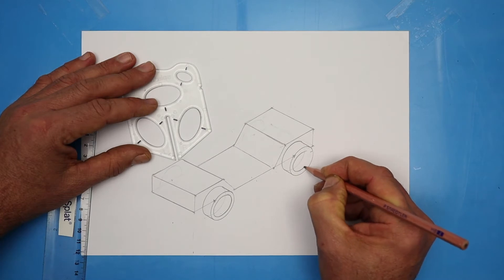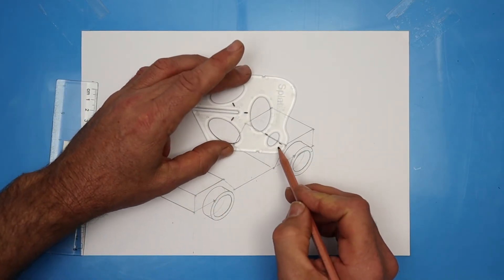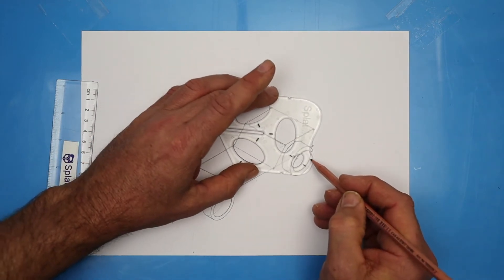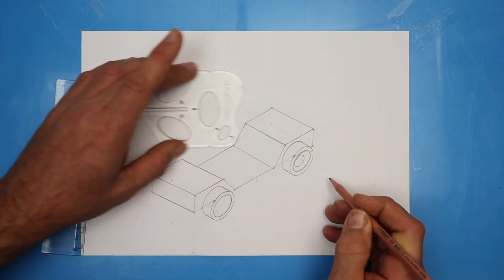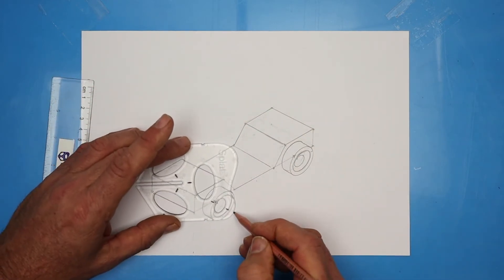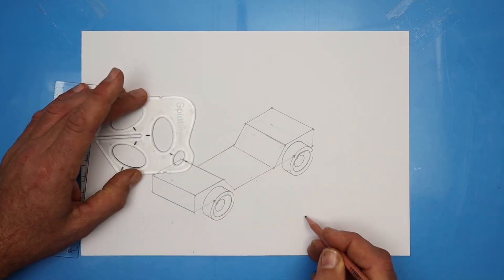Now we're going to draw the rim. We're using the small ellipse. Line it up on that angle. Make sure it just touches that line. Keep it on the same angle and draw in the rim. Try again at the front. Great. There's our wheels complete. A wheel has a tire on a rim.